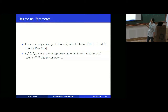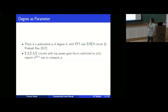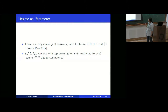But if we restrict the top power gate fan-in to little-o of k, we get a lower bound of n^{Ω(k)} in size. So we can see that inside the class of FPT-size depth-4 circuits parameterized by degree, the depth-4 circuits where the top product gate fan-in is bounded by little-o of k are not as powerful as depth-4 circuits in general.